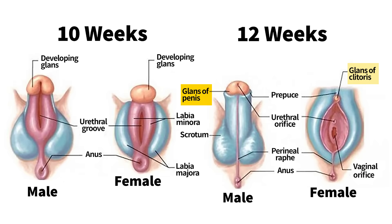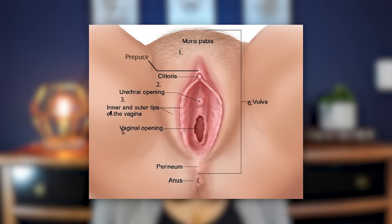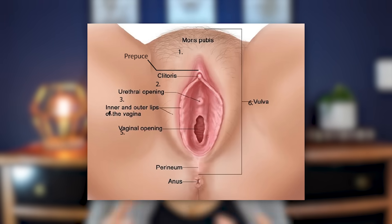In men and women, the head of the penis and the clitoris develop from the same tissues, as do the hood of the clitoris and the foreskin of the penis. The outer lips of the vagina — called the labia majora — are actually analogous to the scrotum. Everything you see in this picture is called the vulva.